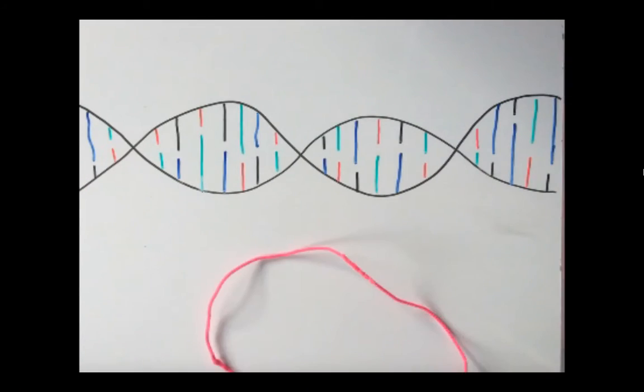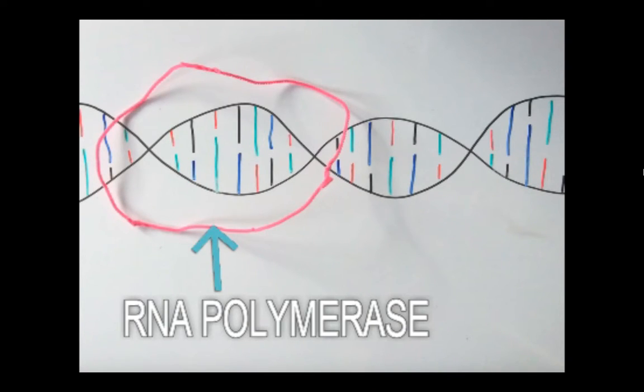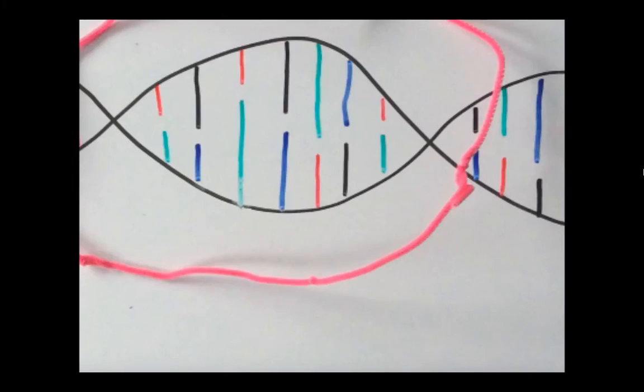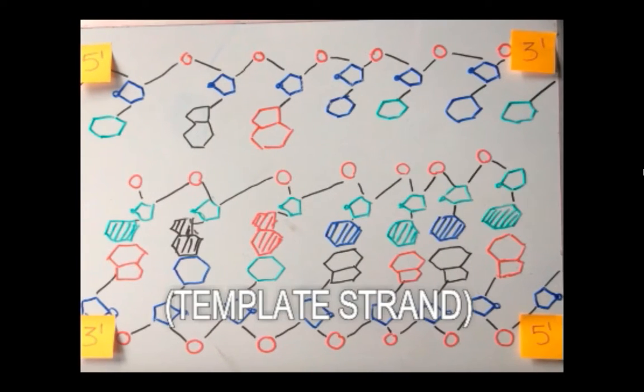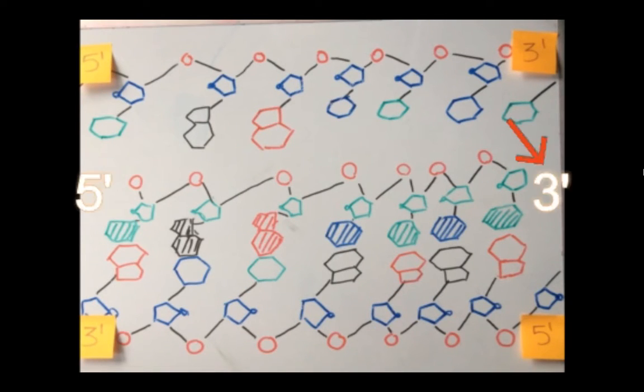In the process of transcription, an enzyme called RNA polymerase binds to the DNA at a binding site signaled by a promoter. The RNA polymerase separates the double helix and begins attaching RNA nucleotides complementary to the template strand of DNA, building the RNA strand off of its 3' end.